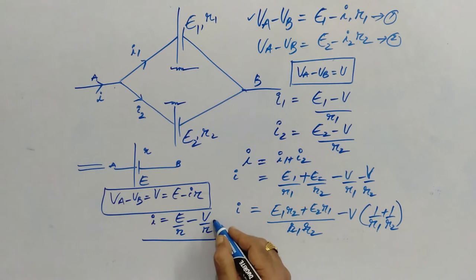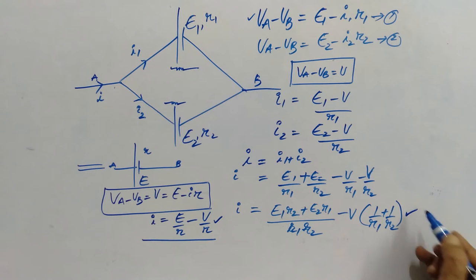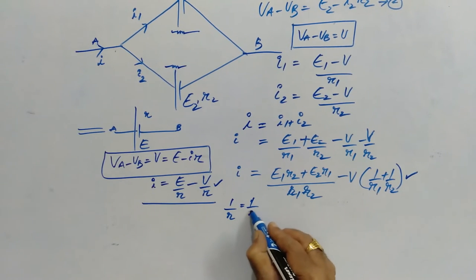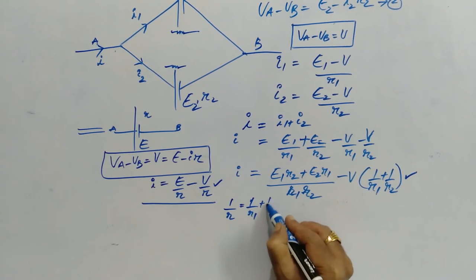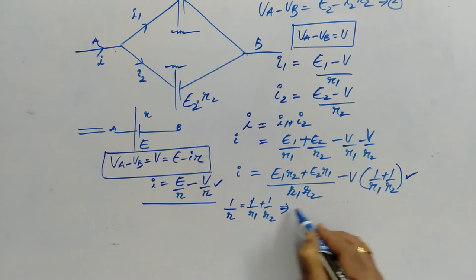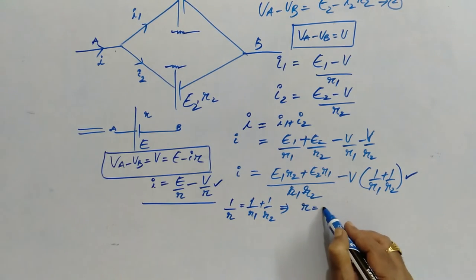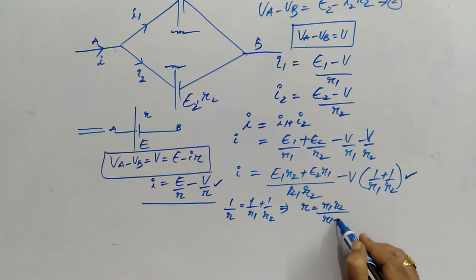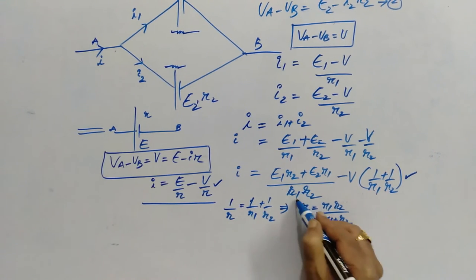Now, if we compare this equation and this equation, this 1 by R is equal to 1 by R1 plus 1 by R2 which gives us R is equal to R1 R2 by R1 plus R2.